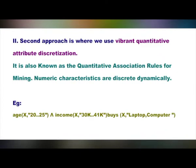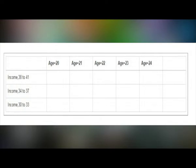The second approach is where we use vibrant quantitative attribute discretization, also known as quantitative association rules mining. Numeric characteristics are discretized dynamically. For example, a person X who is in the age of 20 to 25 and has an income of 30,000 to 41,000 buys a laptop. You can represent this in a tabular form listing age categorized from 20 to 25 and the salary in different ranges. In this way, it is discrete.